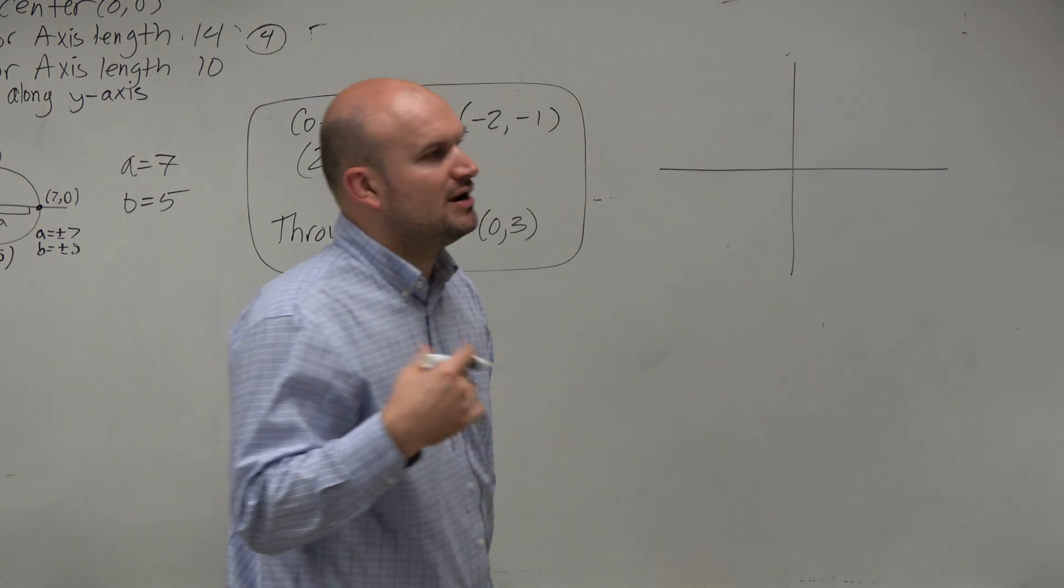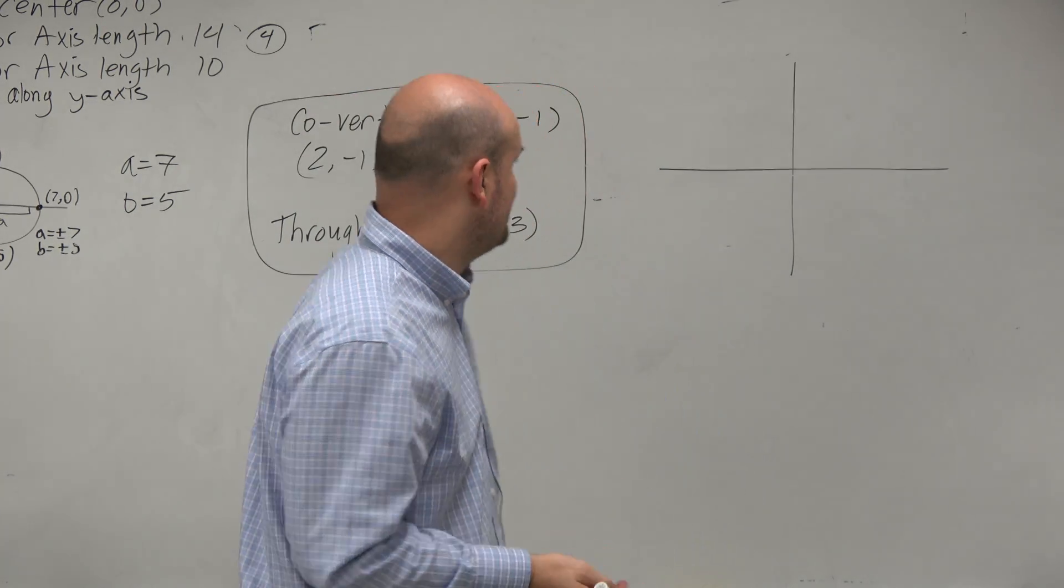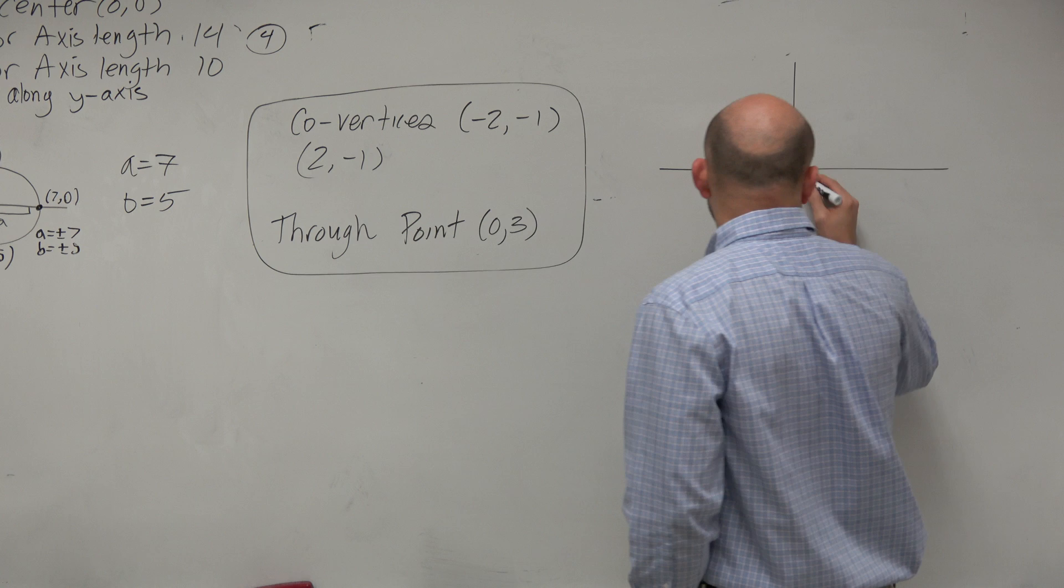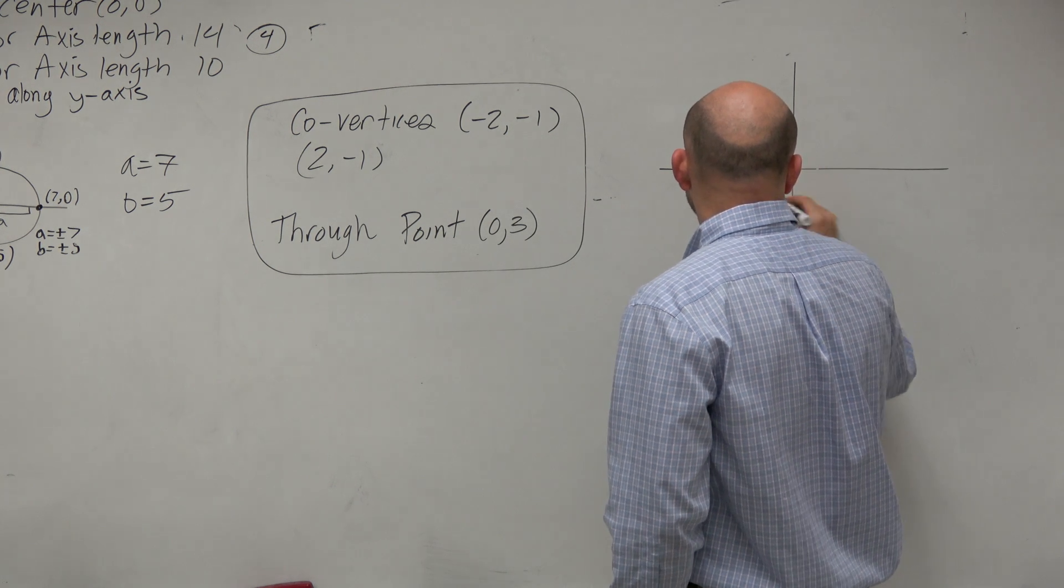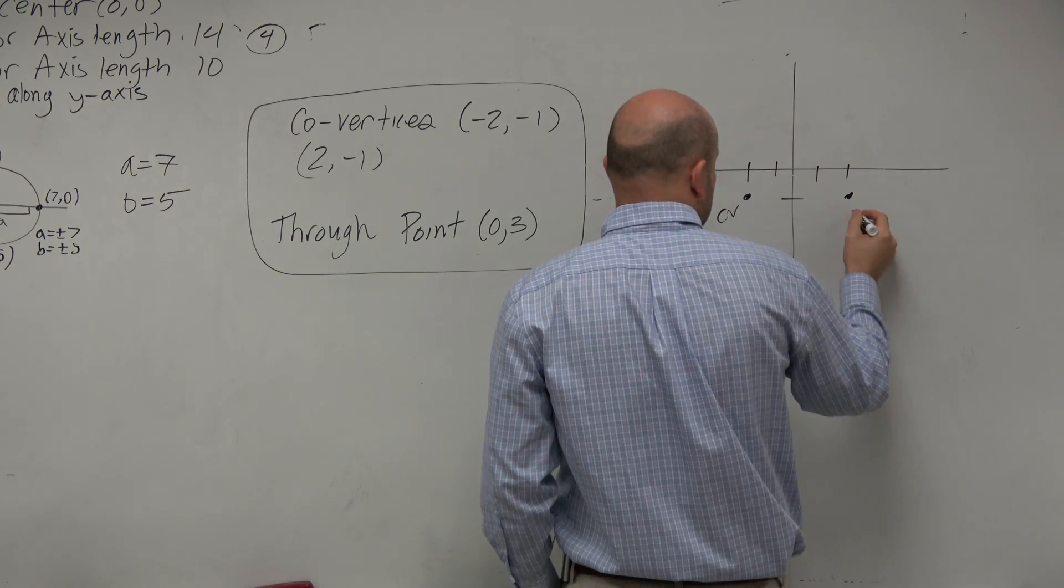So the main important thing is we want to graph the information to at least get an understanding of what information we have. So we have our two covertices at negative 2, negative 1, and then at 2, negative 1. So those are your covertices.